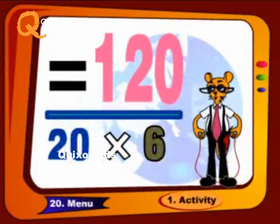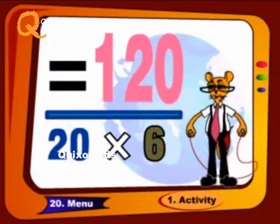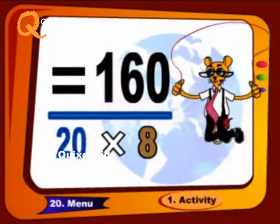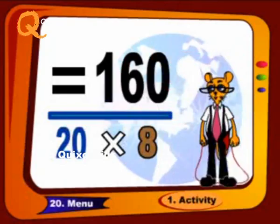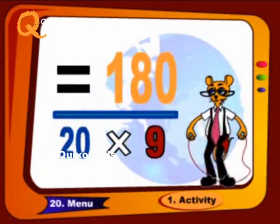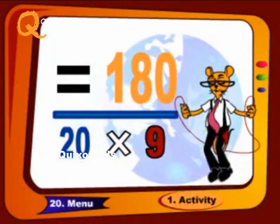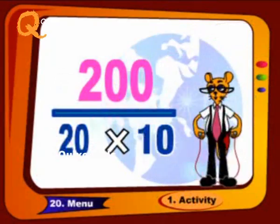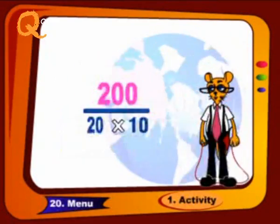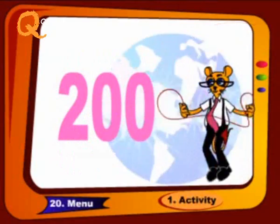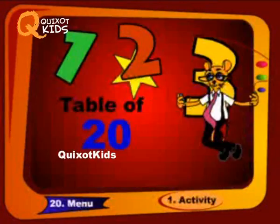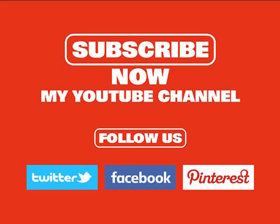Twenty 6s are 120, twenty 7s are 140, twenty 8s are 160, twenty 9s are 180, twenty 10s are 200.